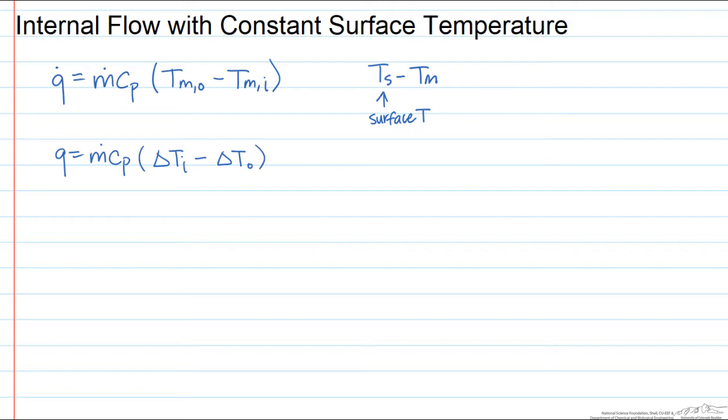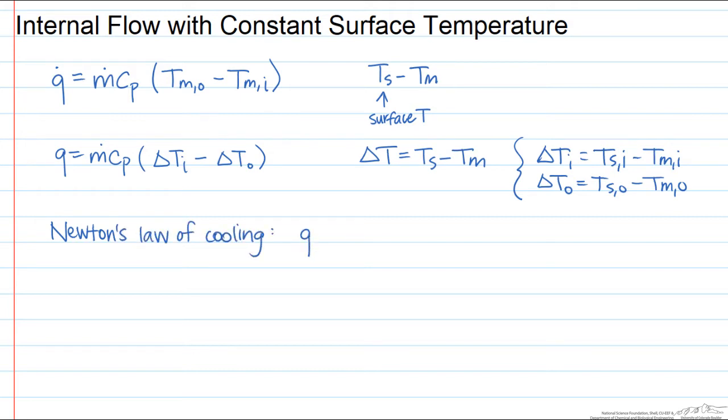Q equals M dot C sub P delta Ti minus delta To, where delta T is equal to the surface temperature minus the mean temperature at any point. So now when we apply Newton's law of cooling, we use that Q equals average heat transfer coefficient times the area times a delta T log mean.